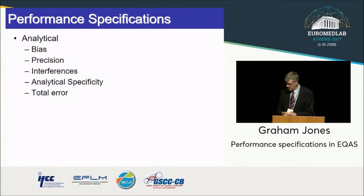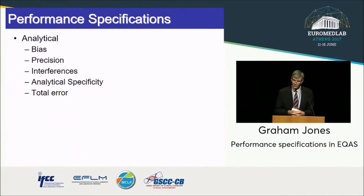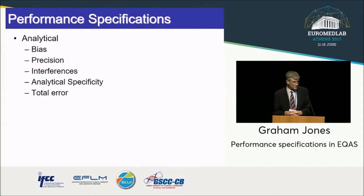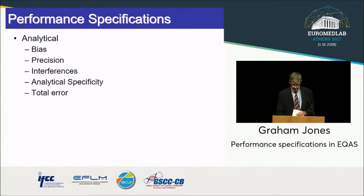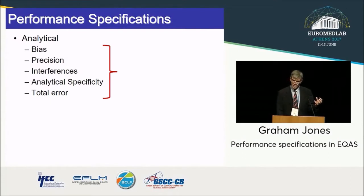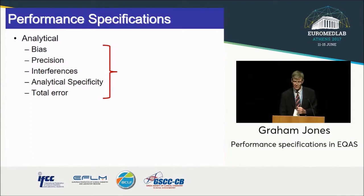As touched on in the previous presentation, in the analytical process there are a number of factors which go together to make up the final result: the bias, the precision, and I'd certainly include the interferences or influence factors that might be caused by the analytical specificity — or we might combine those in various ways to make total error. We can consider analytical performance specifications for any or all of those, and we then need to think about where in our routine laboratory practice we might apply those specifications.